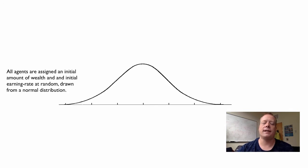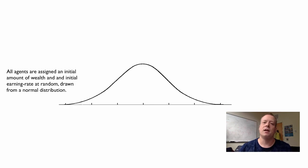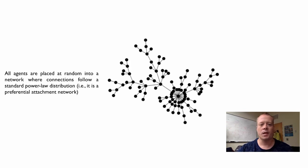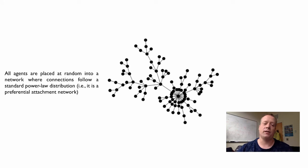In our model, all agents are assigned initial amounts of wealth and an initial earning rate at random, drawn from a normal distribution, so the wealth distribution is fairly normal. This is unlike what we tend to see in actual wealth distributions, but we did this on purpose — we want to start with a world that is equal and see if we can generate a world that is unequal. All agents are placed at random in a network where the strength of ties follows a power law distribution — it is a preferential attachment network, known to represent many real-world networks where a few people have lots of friends and many people have very few.